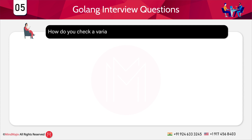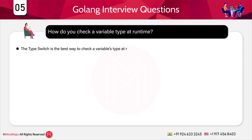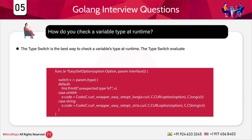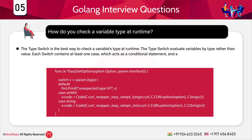How do you check a variable's type at runtime? The type switch is the best way to check a variable's type at runtime. The type switch evaluates variables by type rather than value. Each switch contains at least one case, which acts as a conditional statement, and a default case which executes if none of the cases are true.